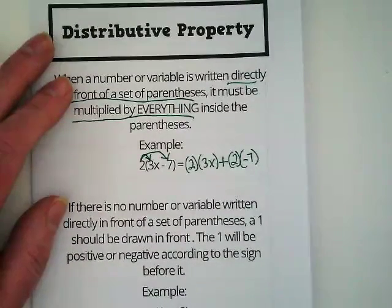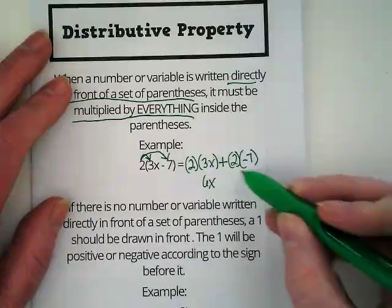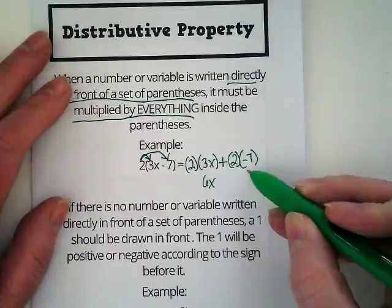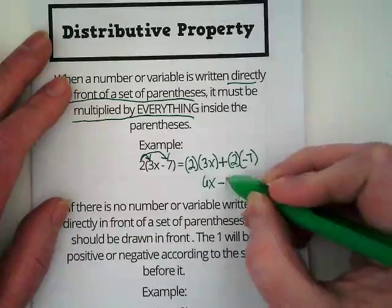What is 2 times 3x? 6x. What is 2 times the negative 7? Negative 14. So the solution is 6x minus 14.